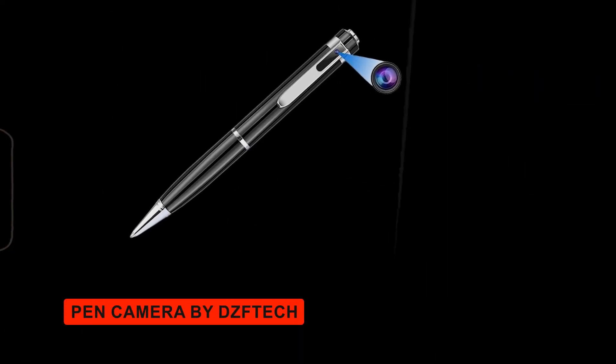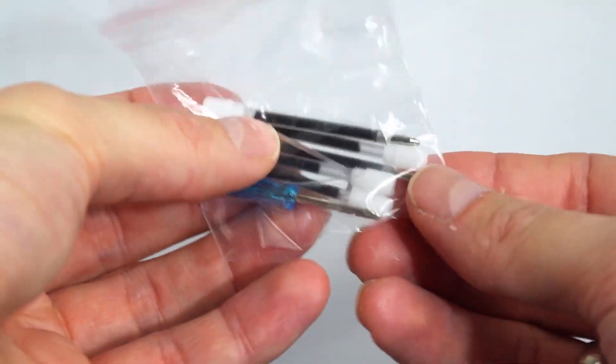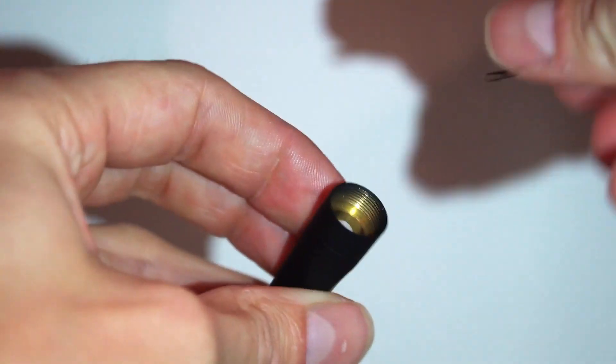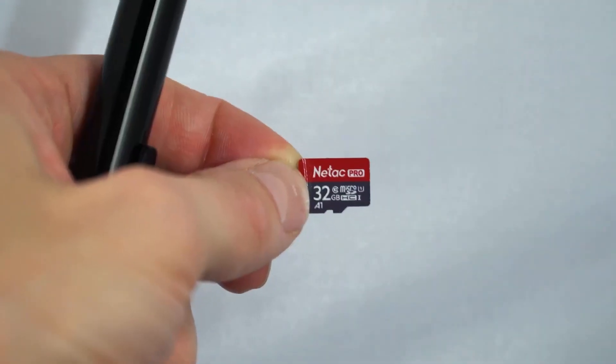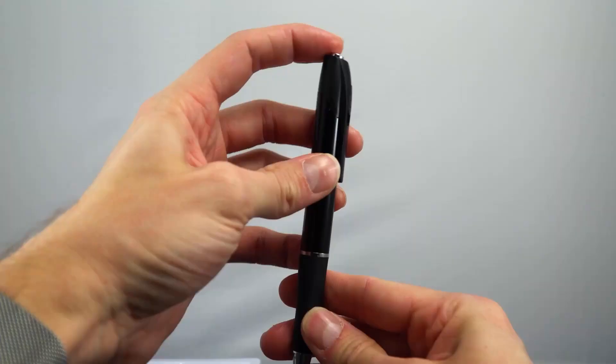Pen Camera by DZ-Aptech. This fully functional pen hides a camera capable of recording full HD video and taking pictures. It comes with four ink refills and is perfect for discreet recording in business meetings or lectures.